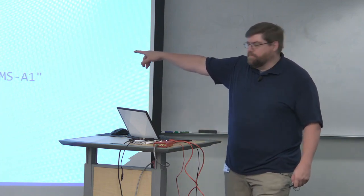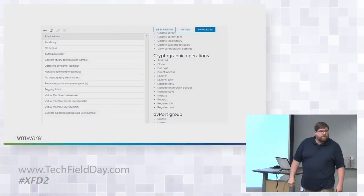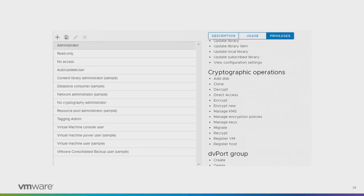You can do VM encryption with PowerCLI. Here are the additional cryptographic operations you can do: you can take an admin team and say junior admins can encrypt things but cannot decrypt them. You can limit who can manage the KMS operations — altering KMS settings is something that should be thought through carefully so you're not endangering your operations.